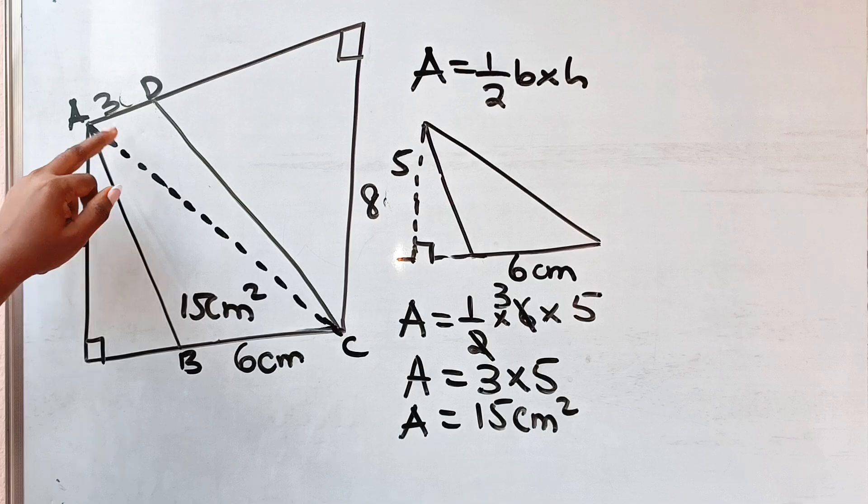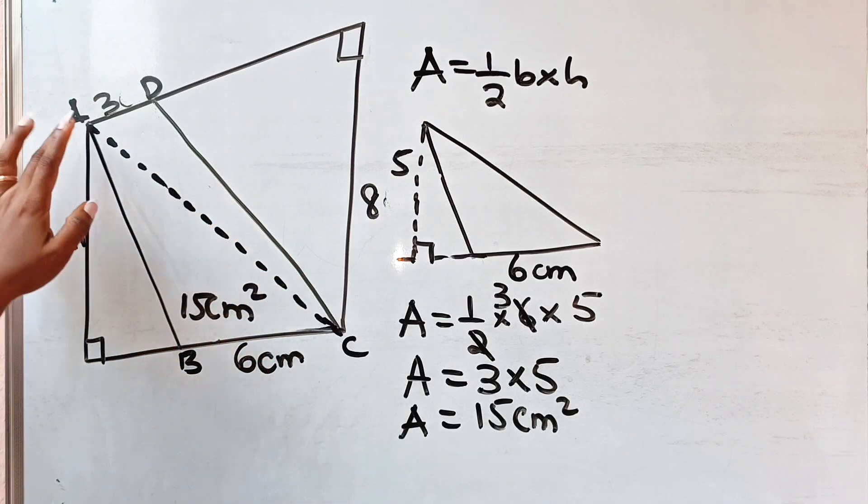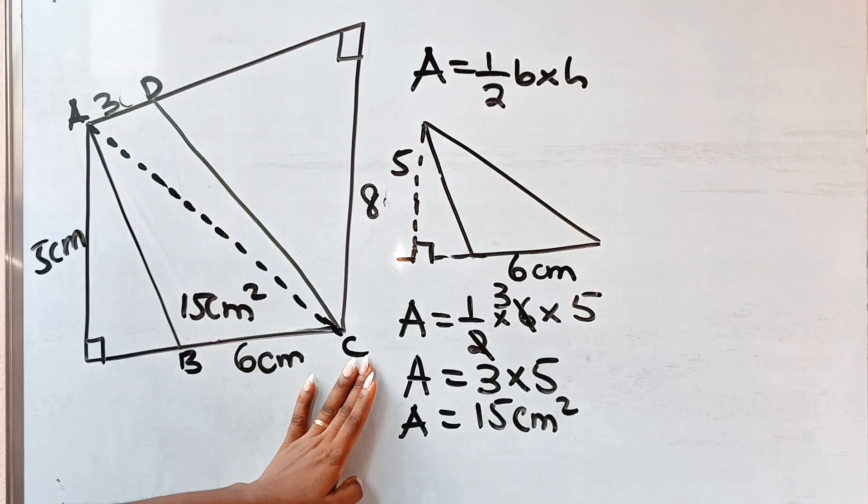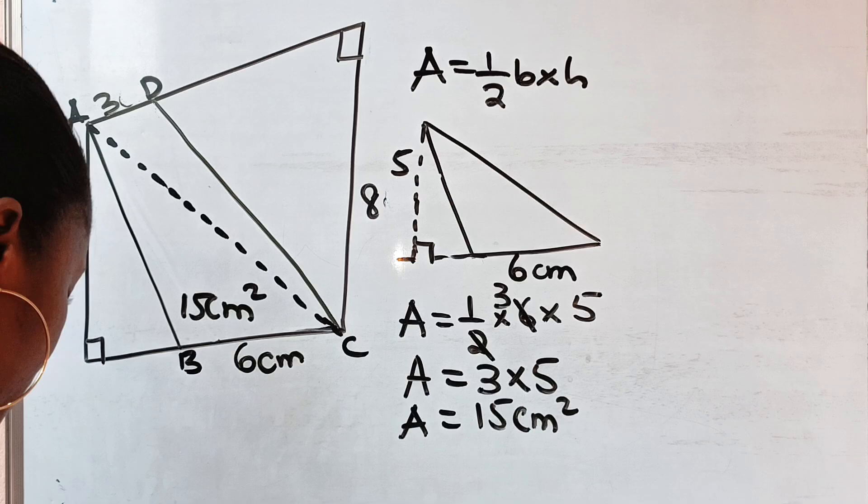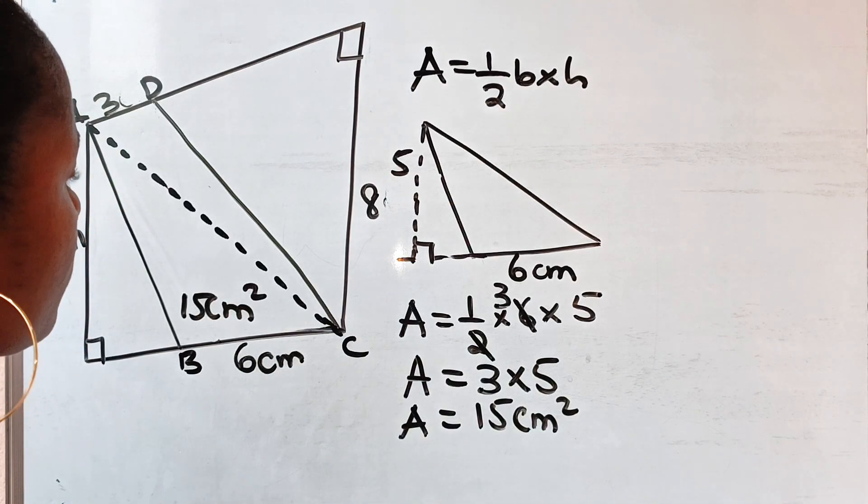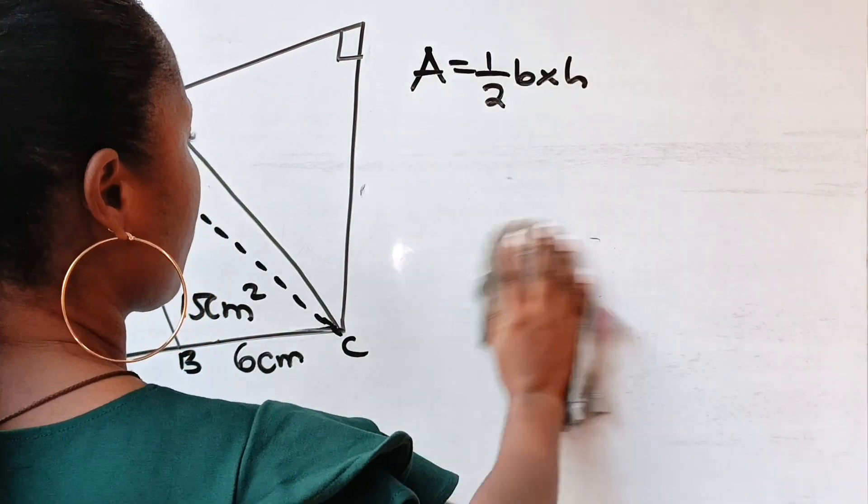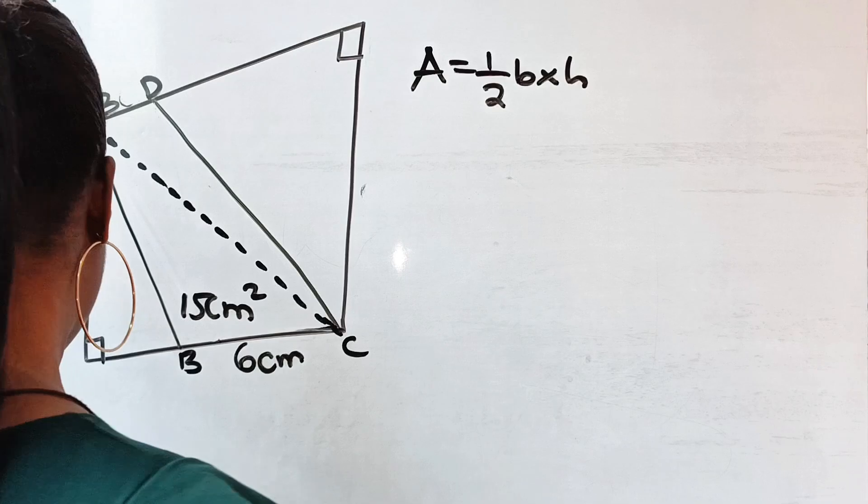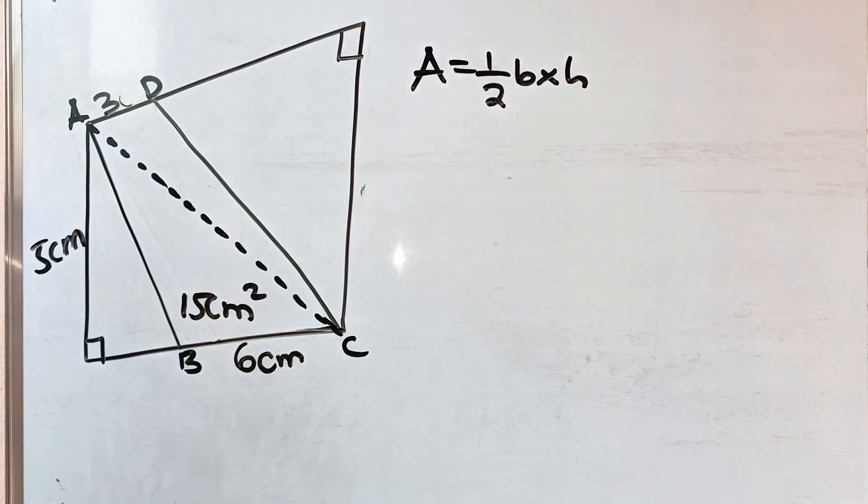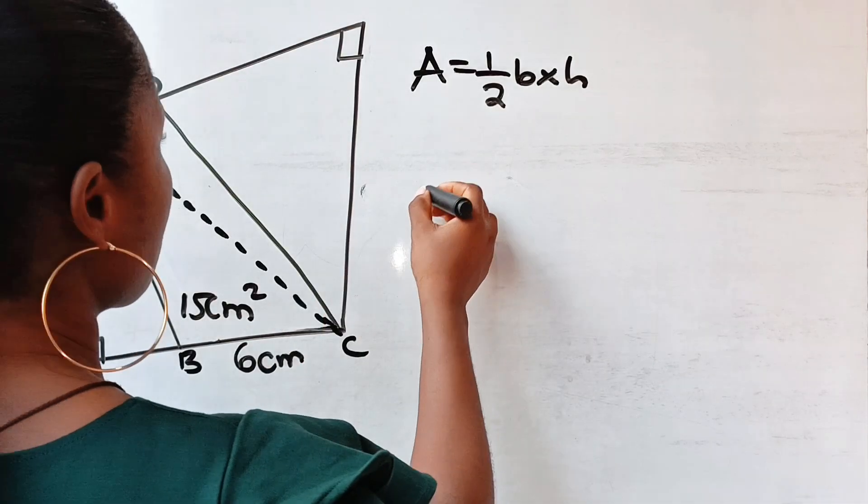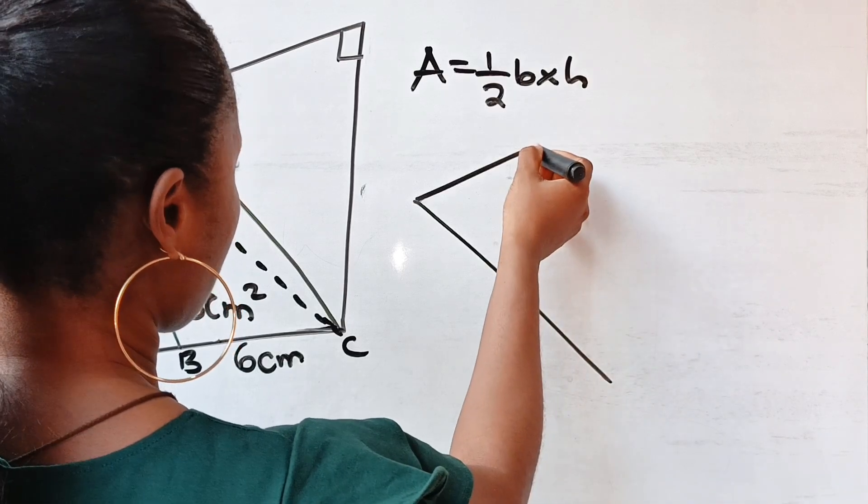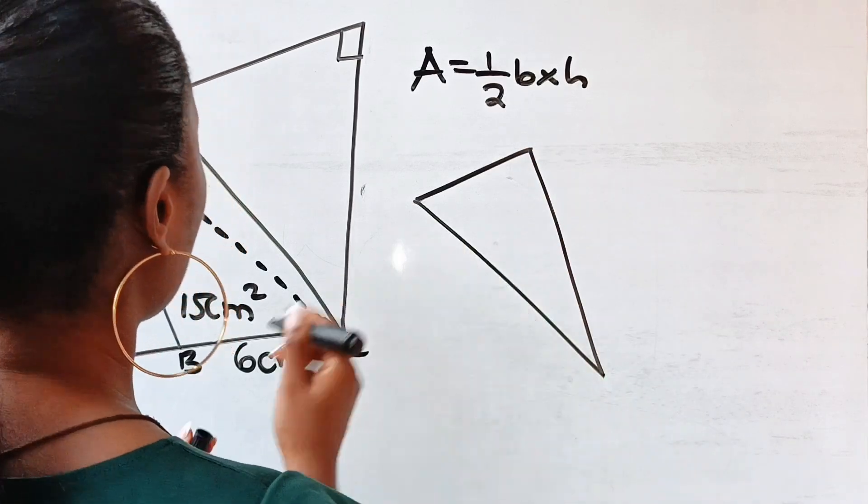Let us look for the area of triangle ADC. So for triangle ADC, let's draw it out. We have something like this. And from here to here is 3.